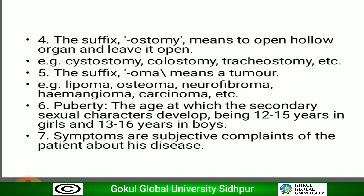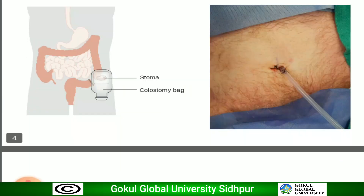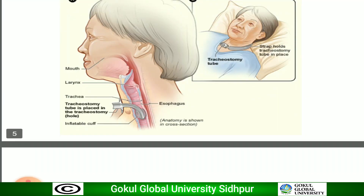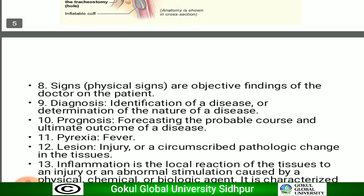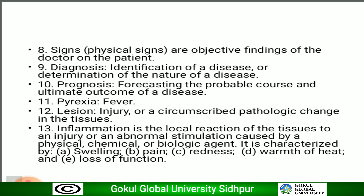Symptoms are the subjective complaints of the patient about his disease, whereas signs are objective findings made by the doctor on the patient. Physical signs we can see on the patient — for example, on examination we can see pallor in the face, eyes, and nails. These are signs.